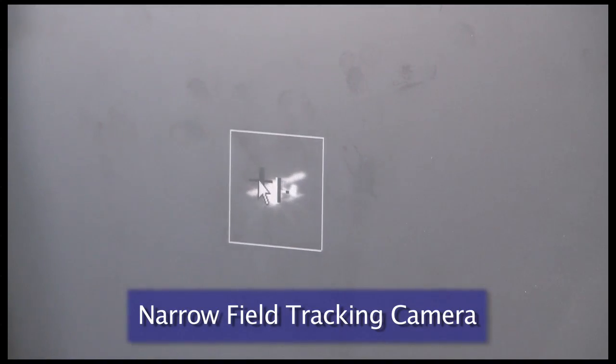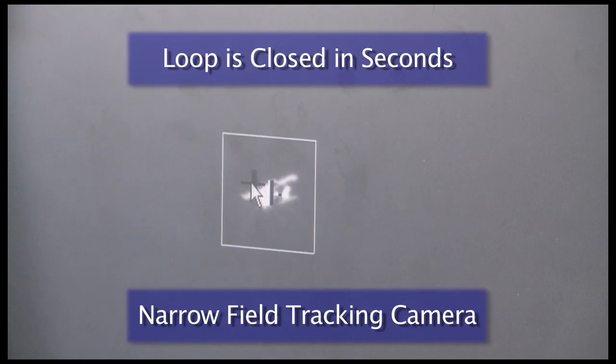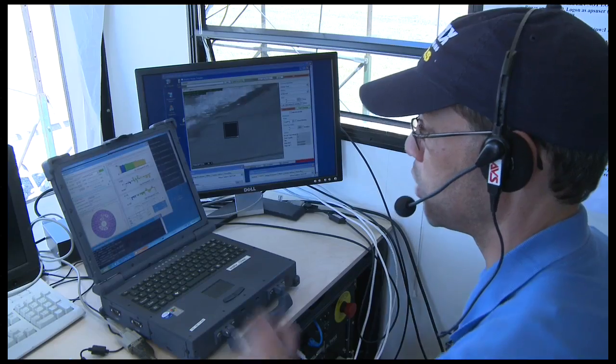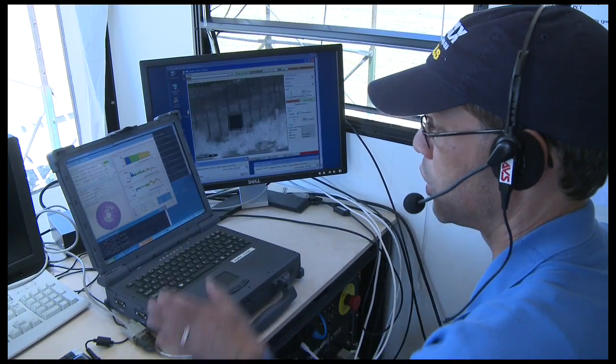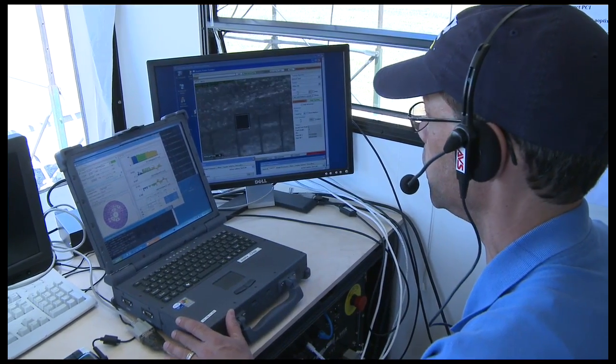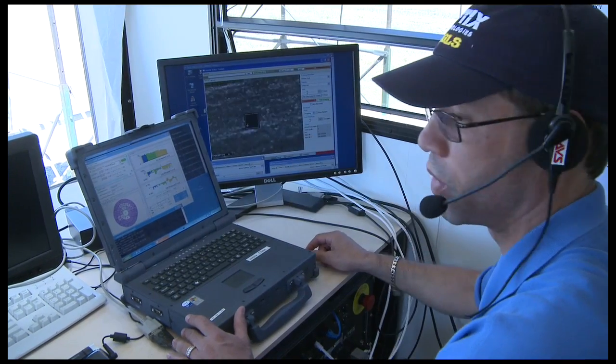Once locked, closing the loop is effortless, and the two terminals are then sending and receiving data over a single 4-inch beam of light. A-optics engineer Brooke Hamilton will now demonstrate how the PAT, or Pointing Acquisition and Tracking, works to close the link.